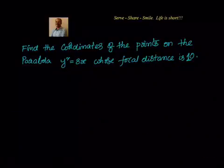Find the coordinates of the points on the parabola y² = 8x, whose focal distance is equal to 10. We know the equation of the parabola is y² = 8x, so the parabola will be opening towards the right.